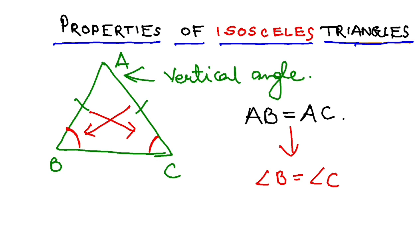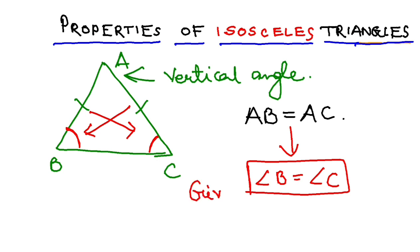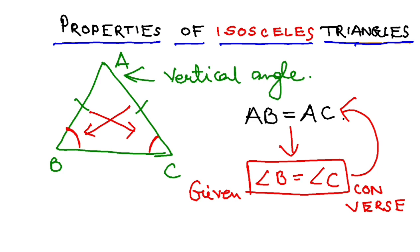This is a very important property: if any two sides are equal, their opposite angles are also equal. Now what is more interesting is the converse — the reverse is also true. So if you are given that angle B is equal to angle C, then the opposite sides are also equal. To summarize: if two sides of an isosceles triangle are equal, their opposite angles are equal; and if two angles of a triangle are equal, their opposite sides are equal.